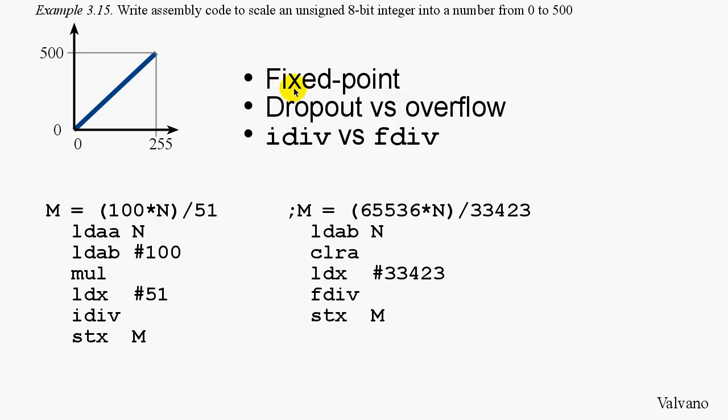In summary, we looked at fixed point, which is a way to represent non-integer values using integer arithmetic. We did it first using the mul and idiv instruction, where we multiplied times 100 first, and then divided by 51. And then secondly, we used the f-div instruction, which is a combination of multiply and divide all in one instruction.